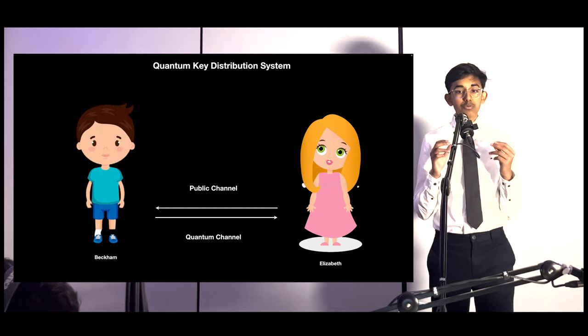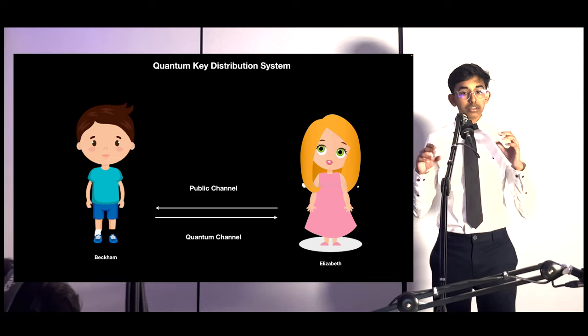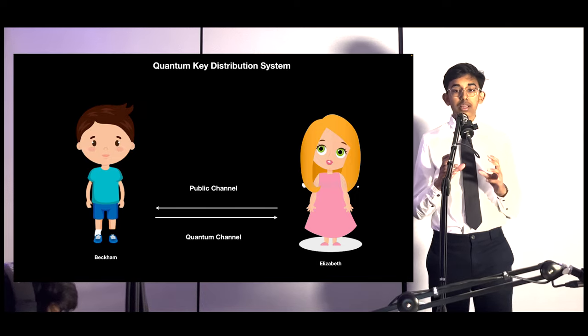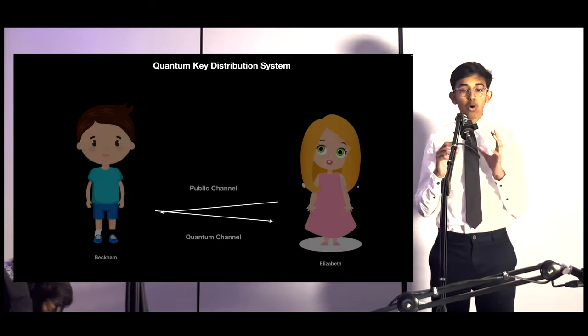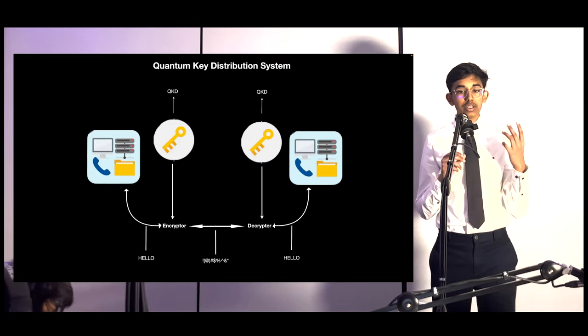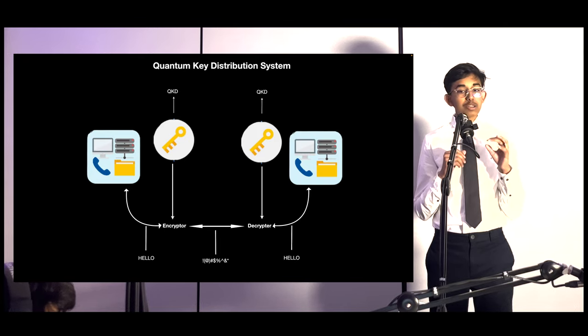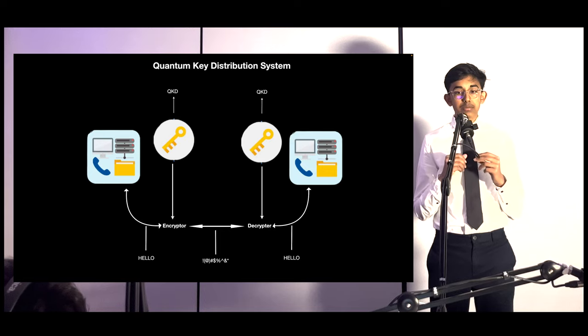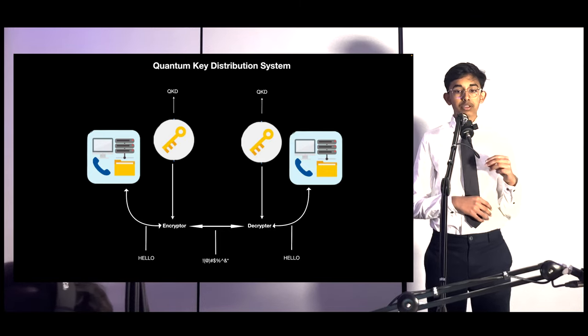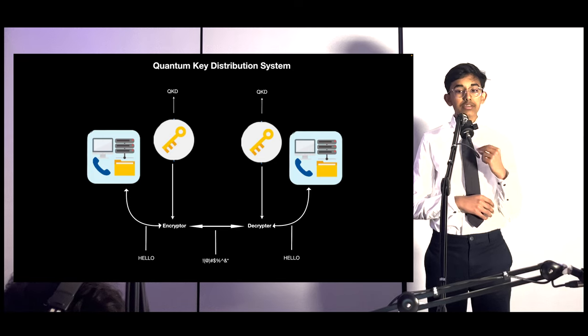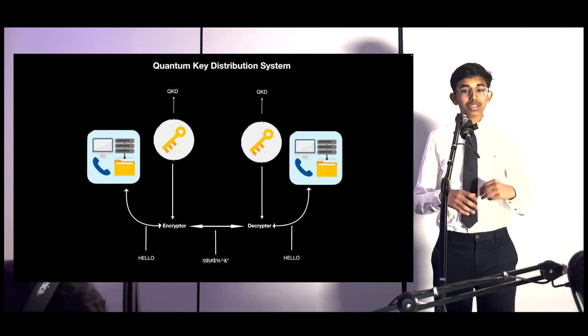They also use a quantum channel to transmit quantum information like photon polarization states. This channel must be secure and preserve transmitted information, delicate quantum states. Once they generate a shared key using QKD, they can encrypt and decrypt messages. Encryption involves applying a mathematical function to plain text messages using the shared key. The ciphertext can only be decrypted using the same shared key. The key itself is not transmitted over the communication channel, ensuring its security.